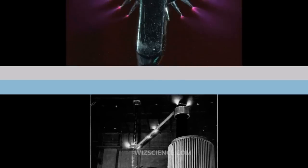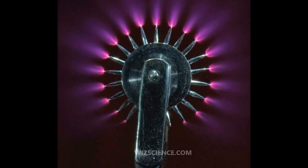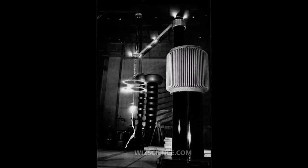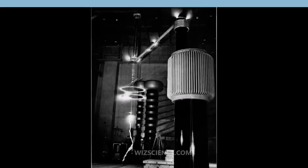Corona discharge is a process by which a current flows from an electrode with a high potential into a neutral fluid, usually air. By ionizing that fluid so as to create a region of plasma around the electrode, the ions generated eventually pass charge to nearby areas of lower potential or recombine to form neutral gas molecules.